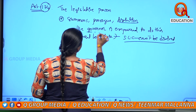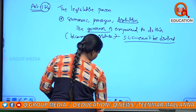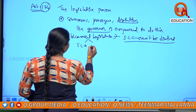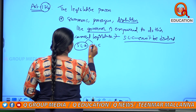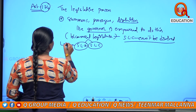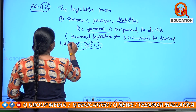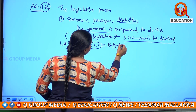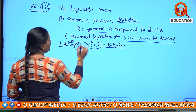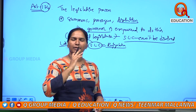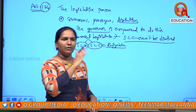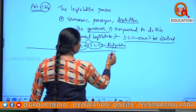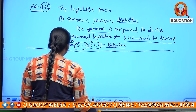These are the legislative processes, and the governor is empowered to carry out this process. Bicameral means legislative assembly and legislative council. The assembly is equivalent to Lok Sabha, and the council is equivalent to Rajya Sabha at the centre.